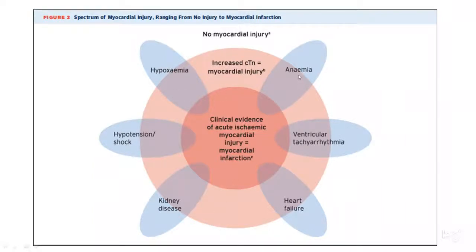Anemia, hypoxemia, hypotension, and septic shock are additional causes where we would see elevated troponin levels.